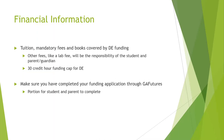Regarding financial information: tuition, mandatory fees, and books are covered by dual enrollment funding. Other fees, such as a lab fee, will be the responsibility of the student or parent or guardian — I will discuss those with you and your student ahead of time. There is a 30 credit hour funding cap for dual enrollment; once you have met those 30 credit hours, you would either not be eligible to take dual enrollment classes or would have to self-pay. Make sure that you have completed your funding application through Georgia Futures — there is a portion for the student and a portion for the parent.